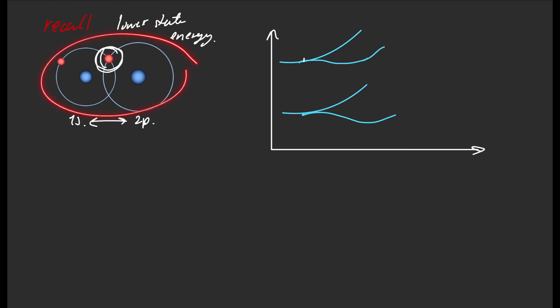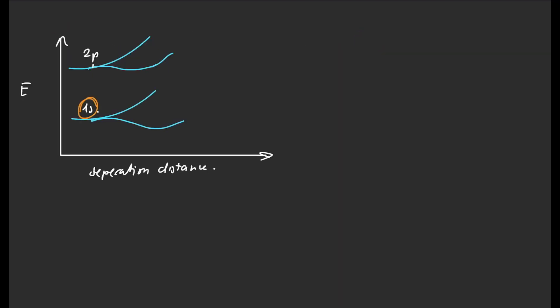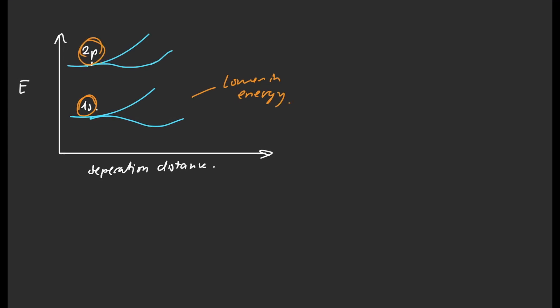When a 1s atomic orbital combines with a 2p atomic orbital, the two atomic orbitals split energies. In the diagram, the y-axis represents the energy and the x-axis represents the separation distance, which means if we go to the right along the x-axis, the distance between the 1s and the 2p atoms decreases. The 1s orbital is lower in energy than the 2p orbital. As the two atoms approach one another, the 1s atomic orbital splits into two energy levels. Same goes with the 2p orbitals.